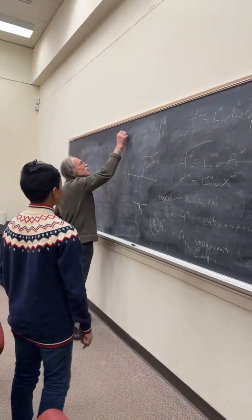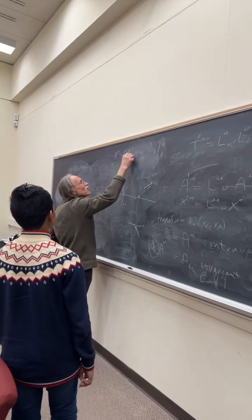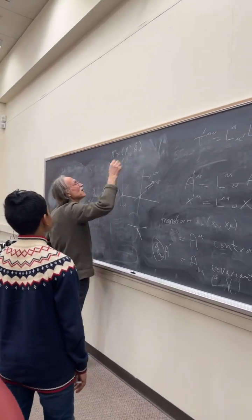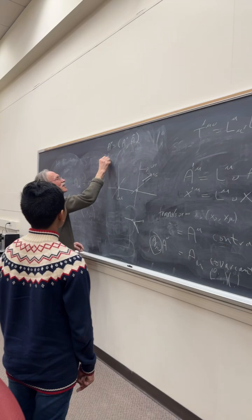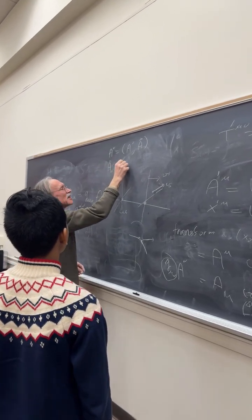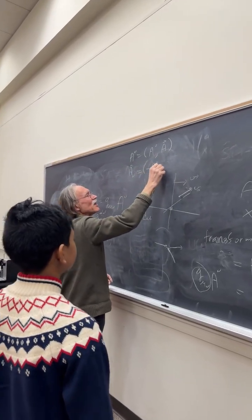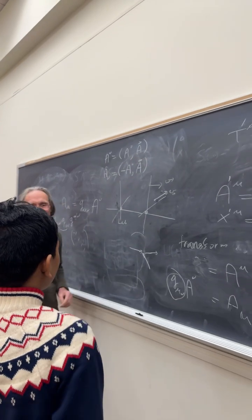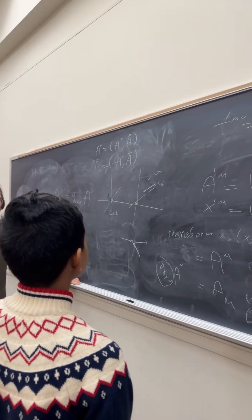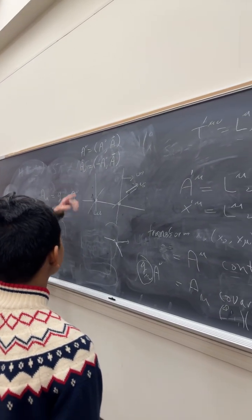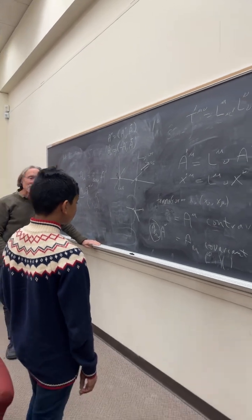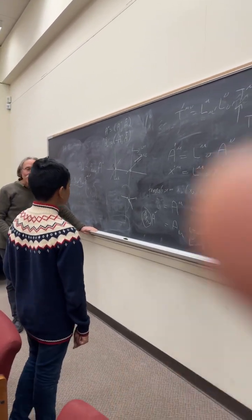So if a mu is this vector that is a 0, a, and these are three components, then a mu with lower index is minus a 0, a. Okay, that's all. Yeah, and this is equivalent to multiplying with that metric, so the 0 component can just change sign.